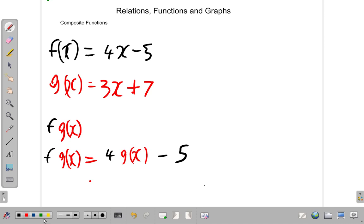So it is 4 multiplied by g of x. But the question now is, what is g of x? Let's be more specific, what exactly is g of x?